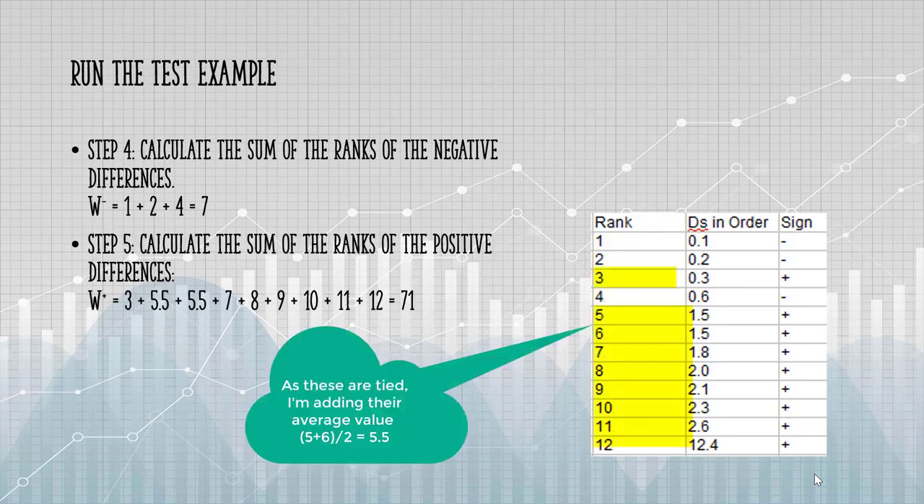The next step is to calculate the sums. We're going to calculate W minus first. This is the sum of those negative ranks. You're adding the ranks here, not the differences. So my W minus is going to be 7. I do a similar thing to find my W plus. If I add up all of my positives, I get 71.